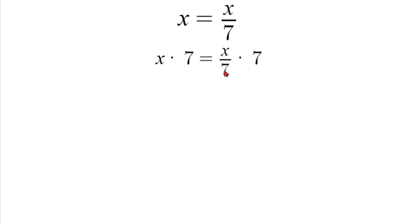The denominator of 7 times 7, that'll cancel, which will leave 7x equals x.